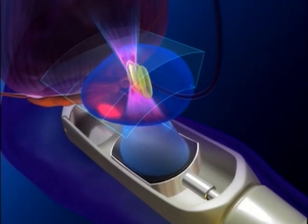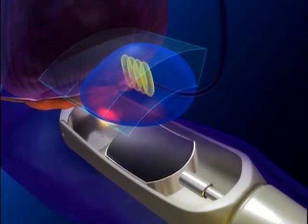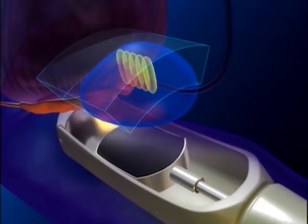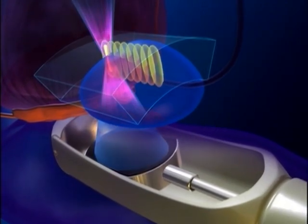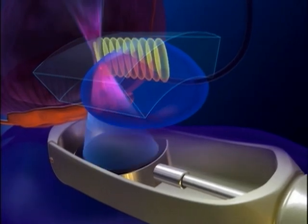The imaging capabilities of the technology allow for identification of vital structures such as the prostate capsule, seminal vesicles, rectal wall, and physiological location of the neurovascular bundles.